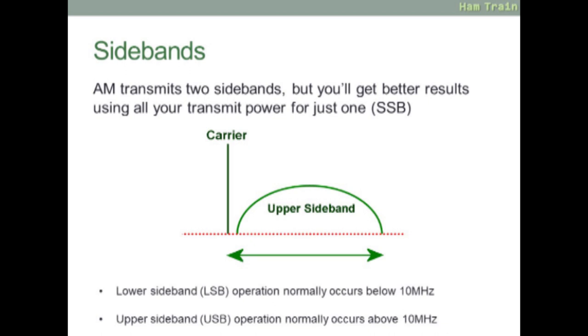A quick look at sidebands. Normally AM amplitude modulation transmits two sidebands, but you only really need to send one, and you get better results putting all your transmitting power into just one. Pictured on screen is upper sideband, to the right of the carrier. Note you can have upper sideband or lower sideband. Lower sideband is usually below 10 megahertz, and upper sideband is above 10 megahertz. The tradition has stuck, and below 10 megahertz it's normally lower sideband, above 10 megahertz it's normally upper sideband. One to remember for the exam.